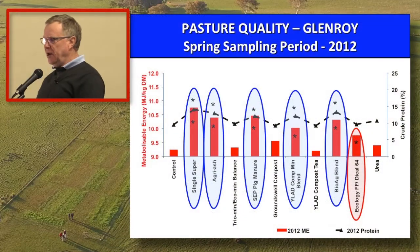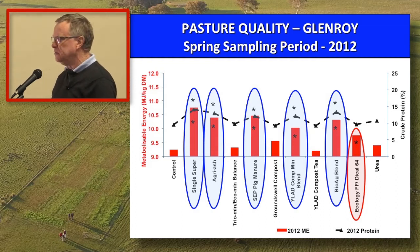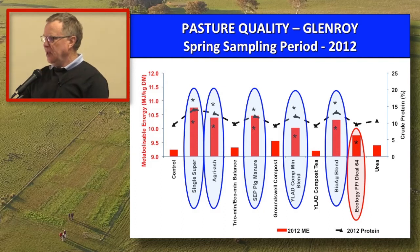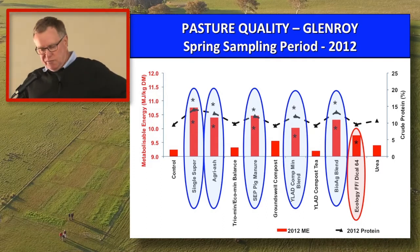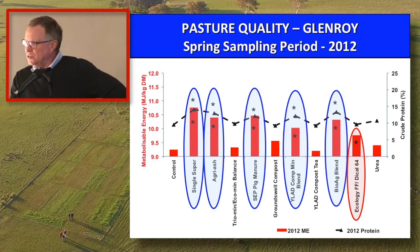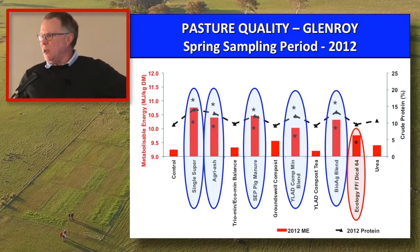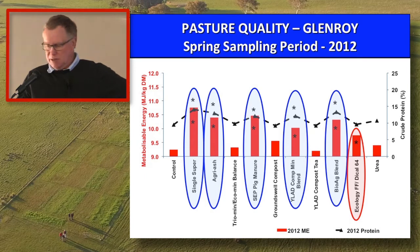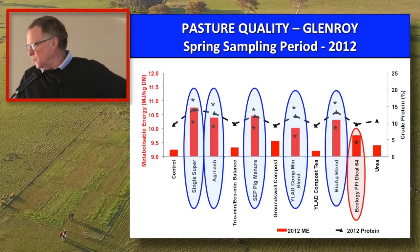I'm going to show the same as Fiona — the two sites, Glenroy and Kiora — and we've chosen the years 2012 and 2014. What you're looking at now is the Glenroy site in 2012. On the left hand side of the graph in red is energy — metabolisable energy. On the right hand side is crude protein. Those samples were sent off to the feed lab at Wagga and they give us back the results. They also give us digestibility, which I used. The five products circled in blue were statistically different from the control for both energy and protein. There's one product circled in red — the Dical — which was only significantly different for energy.